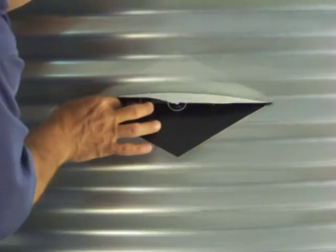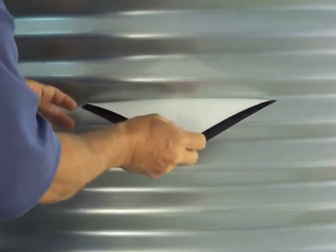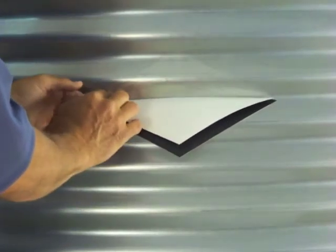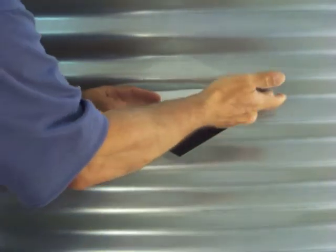We'll go ahead and smooth that down. When we have that where we like it, we remove the top backer. Go ahead and smooth that in.